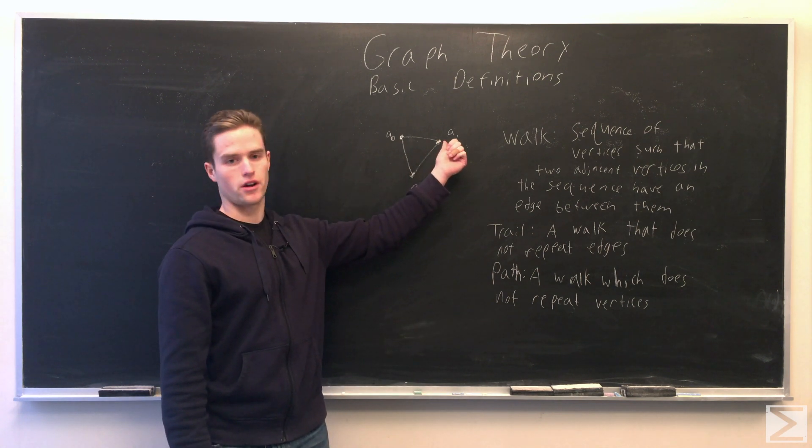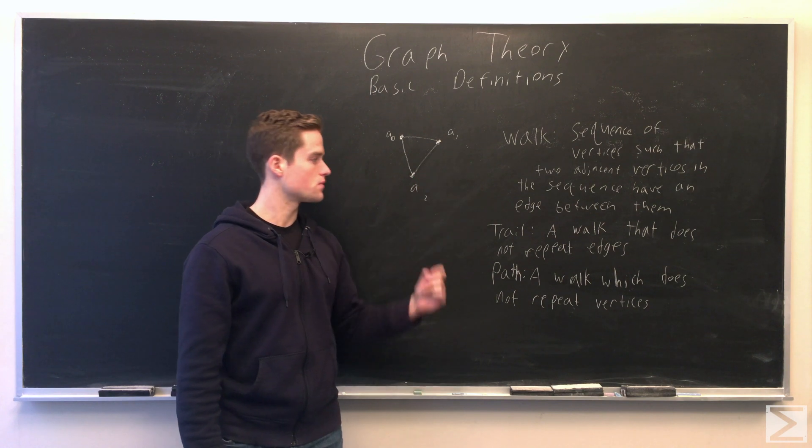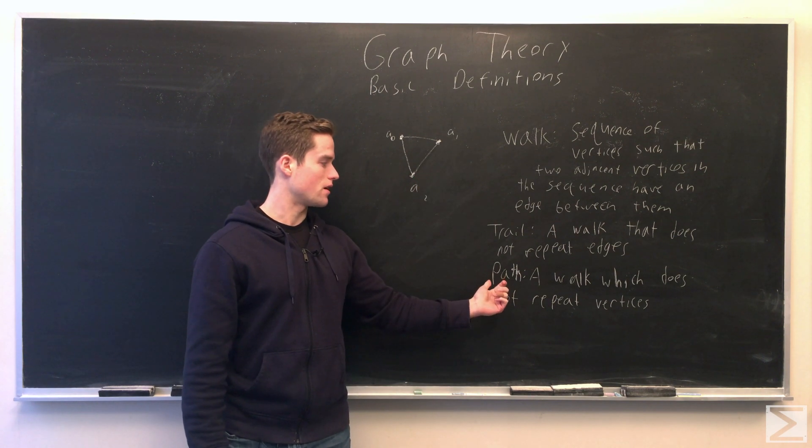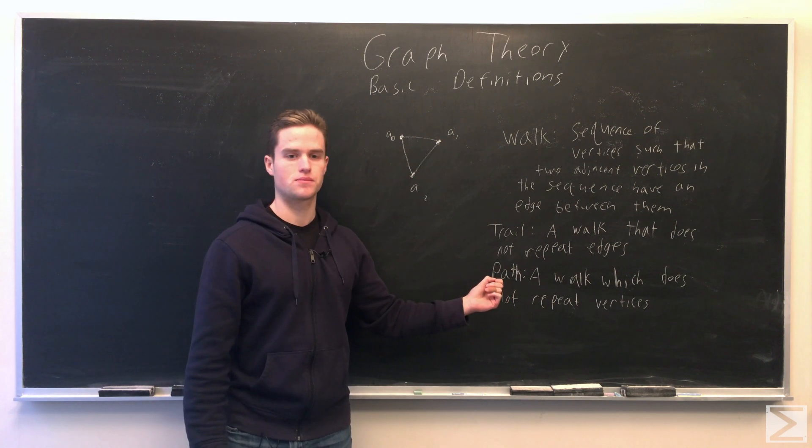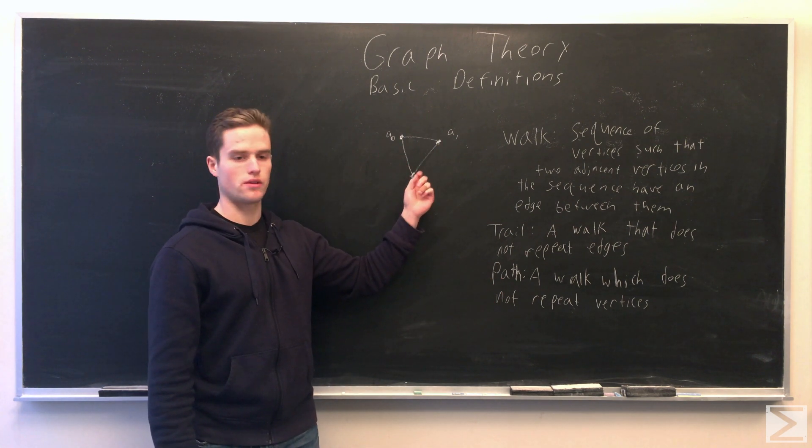So, we go A2, A1, we're not going back from A1 to A2, we do not go over the same edge twice. And a path has extra restriction, it's a walk where we do not repeat any vertices.